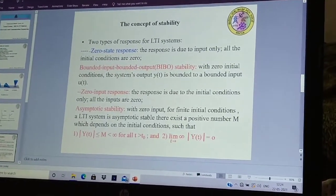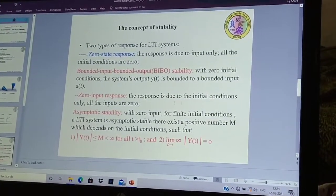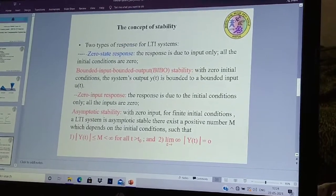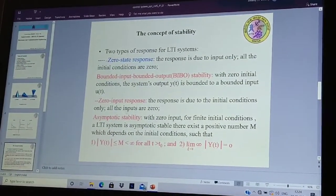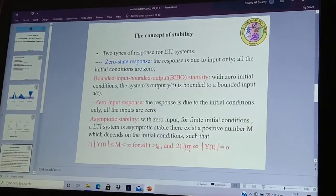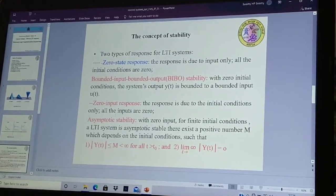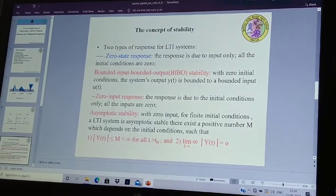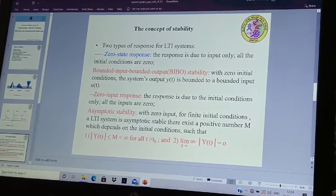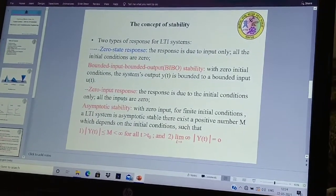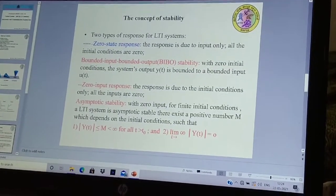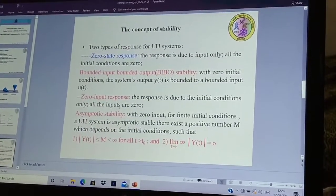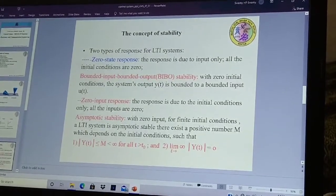Next is zero input response. The response is due to initial conditions only. The response of a system is due to initial conditions only. But all the inputs are zero. That is called as zero input response. Zero input response means inputs are zero. It is giving the output response due to the initial conditions.